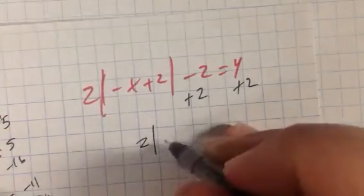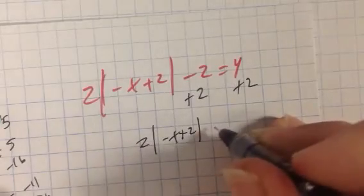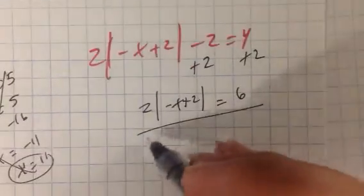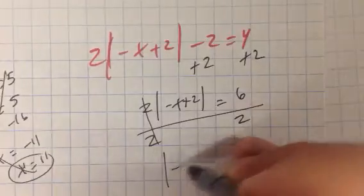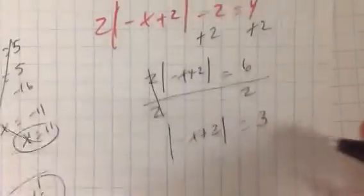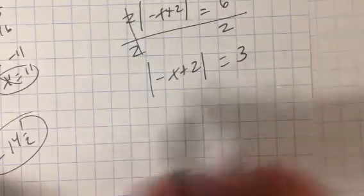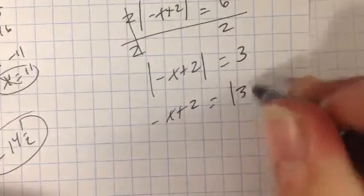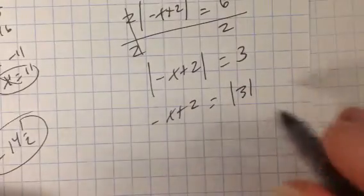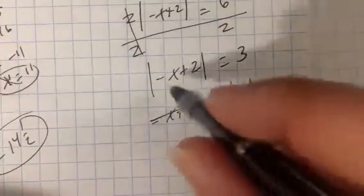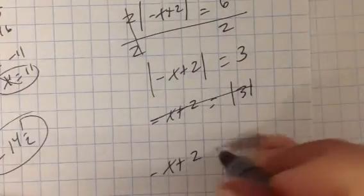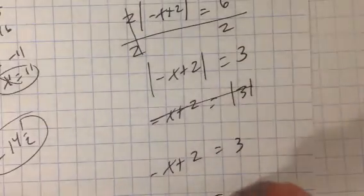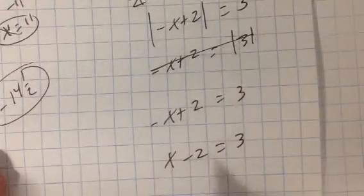First off, we obviously know backwards PEMDAS, SADMEP, plus 2 on both sides. You got 2 times the absolute value of negative X plus 2 equals 6. And then, we divide. This can be treated like its own variable. Divide by 2. So, you got absolute value of negative X plus 2 equals 3. Now, you can switch it around and say, negative X plus 2 equals the absolute value of 3 and go positive or negative 3.